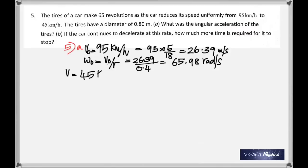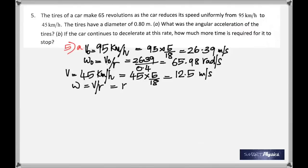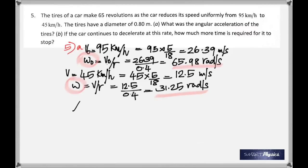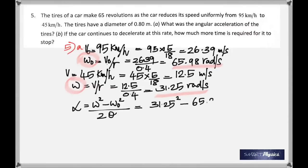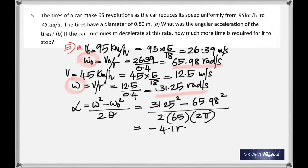The final speed gives 12.5 m/s, and ω = v/r gives 31.25 rad/s. Now we can find alpha: α = (ω² − ω₀²) / (2θ). Since it makes 65 revolutions, θ = 65 × 2π. That gives −4.1 rad/s².